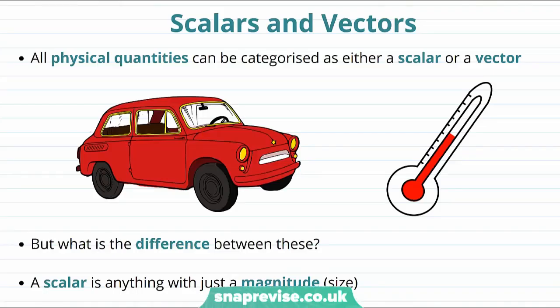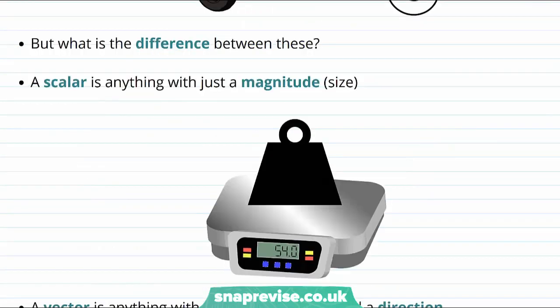It turns out that all physical quantities can be categorized as either a scalar or a vector. And when we talk about physical quantities, what we're talking about is the things that we can measure. For example, the speed and direction that a car is moving, or we can measure things like the temperature. So what is the difference between these two categories, scalars and vectors?